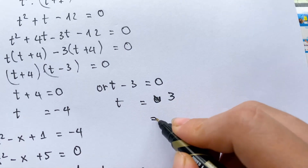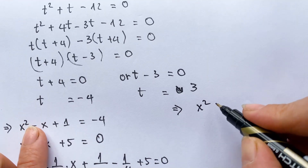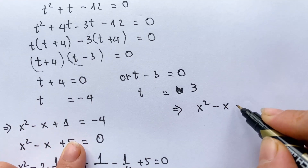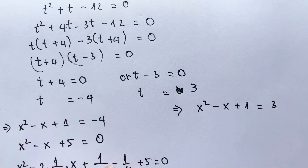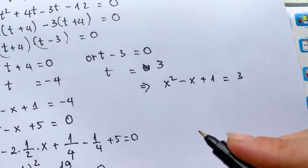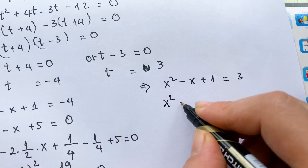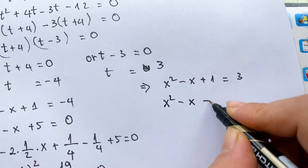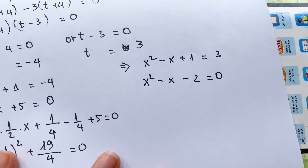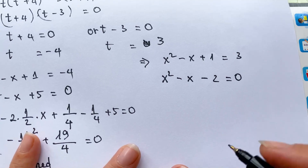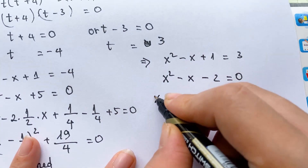For t equals 3, we have x squared minus x plus 1 equals 3. Then we can say x squared minus x minus 2 equals 0. For this equation we have two values of x.